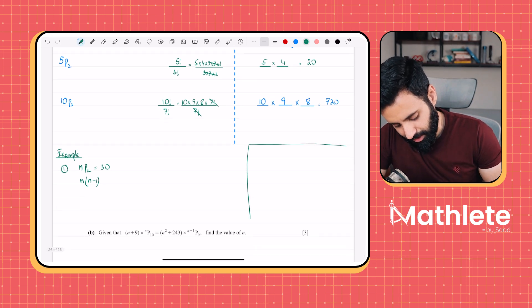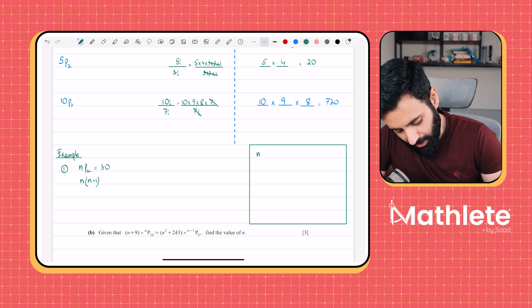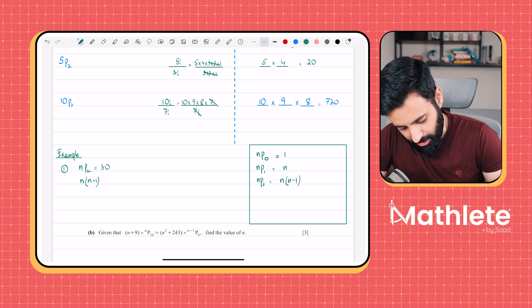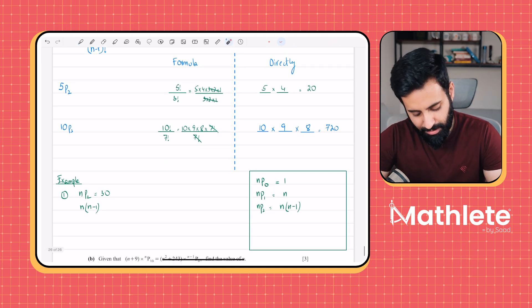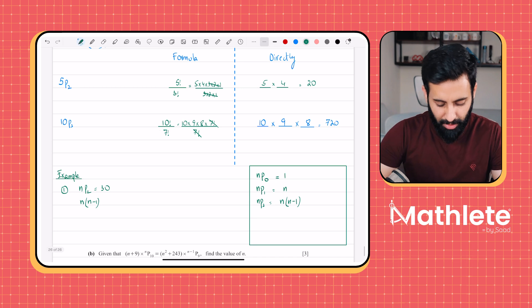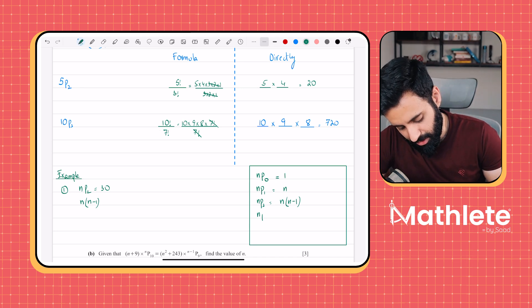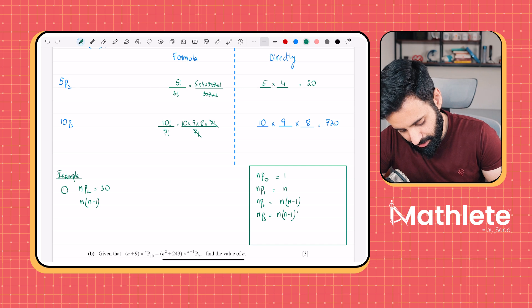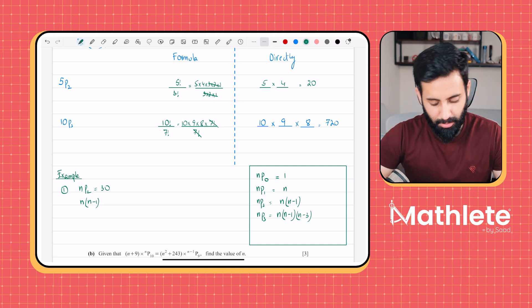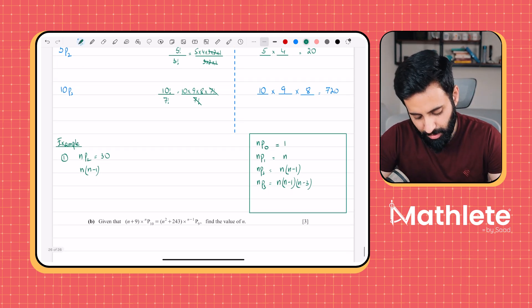So if let's say you have NP0, that's equal to 1. If you have NP1, that's equal to N. If you have NP2, that means N times N minus 1. Why? Because as you can see, 5P2 is 5 times 4. So NP2 in terms of N would be simply N times N minus 1. If let's say you have NP3, that would be N times N minus 1 times N minus 2. So this is the more direct way of doing it, even if you use the formula.